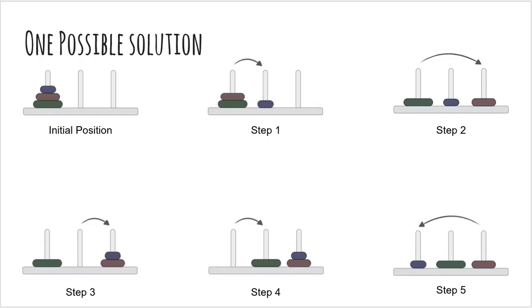Alright, so let's look at a solution of how we could possibly move these disks to another tower. In the first step, we move the smaller disk to what will become a destination tower. Then, in the second step, we move the middle disk to the auxiliary tower. In the third step, we move the smaller disk on top of the middle disk.